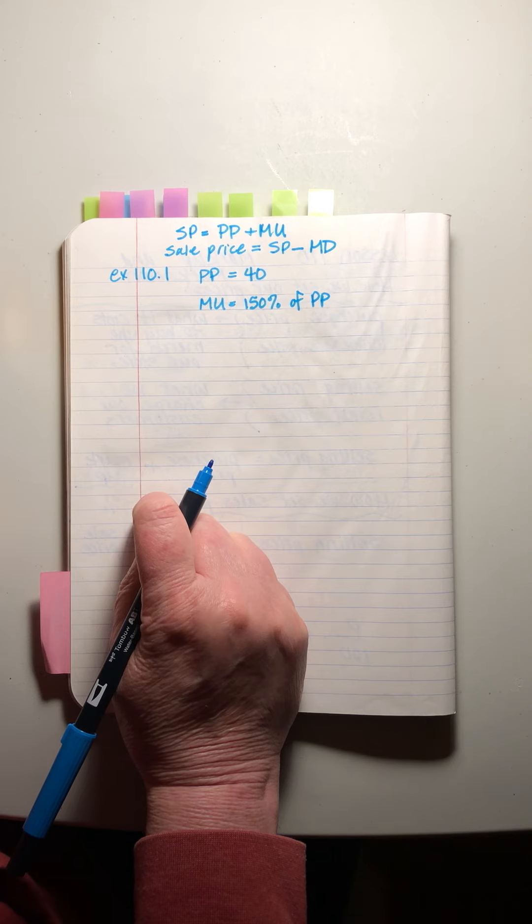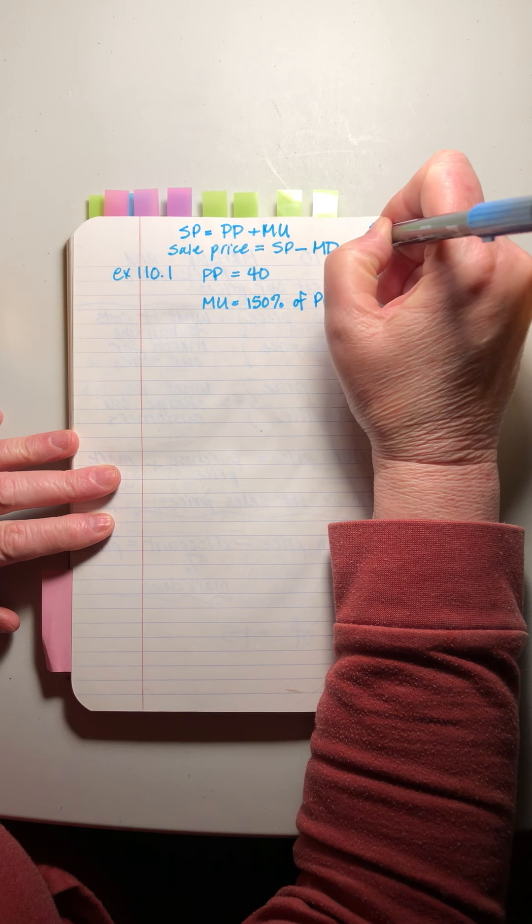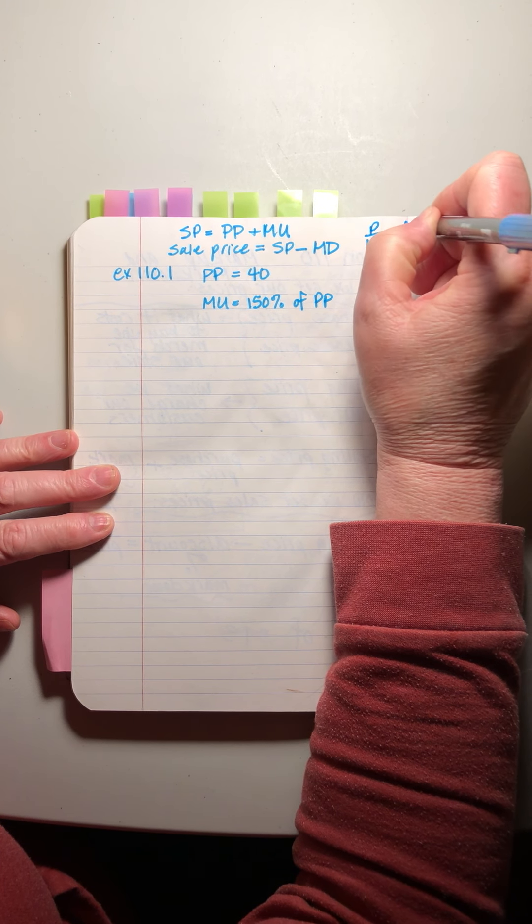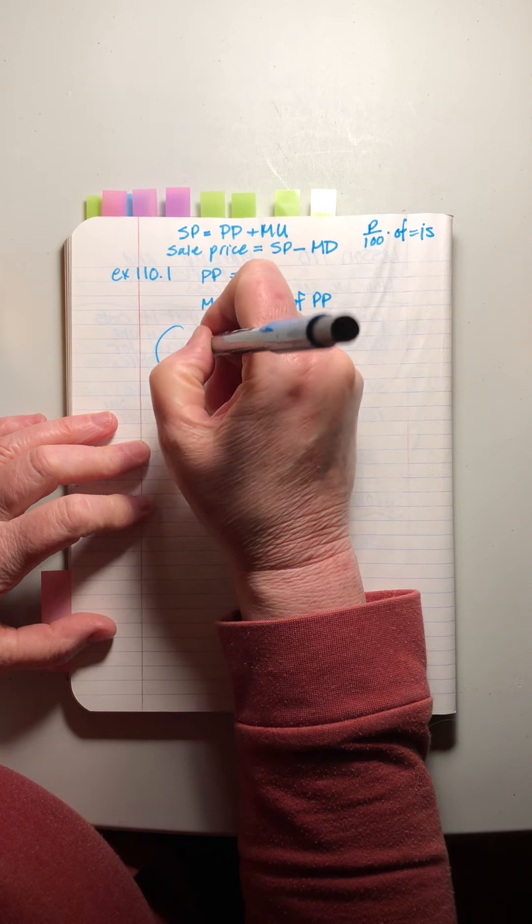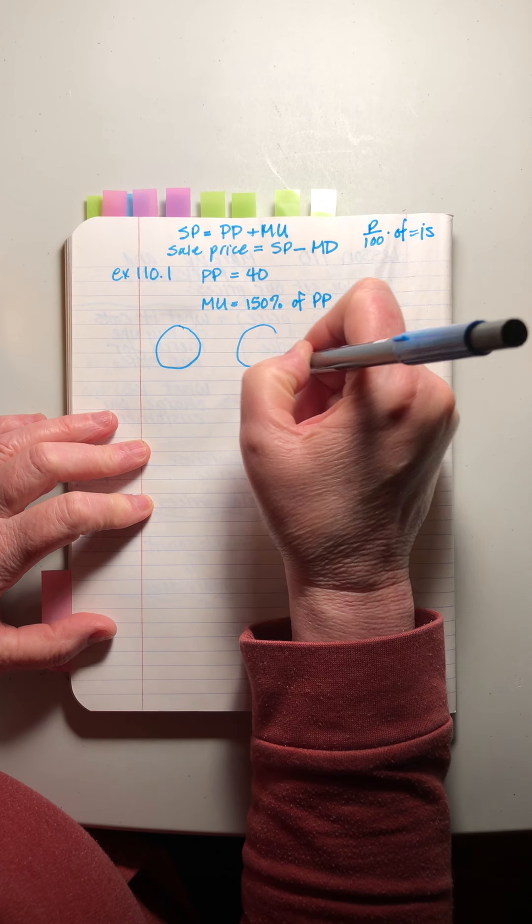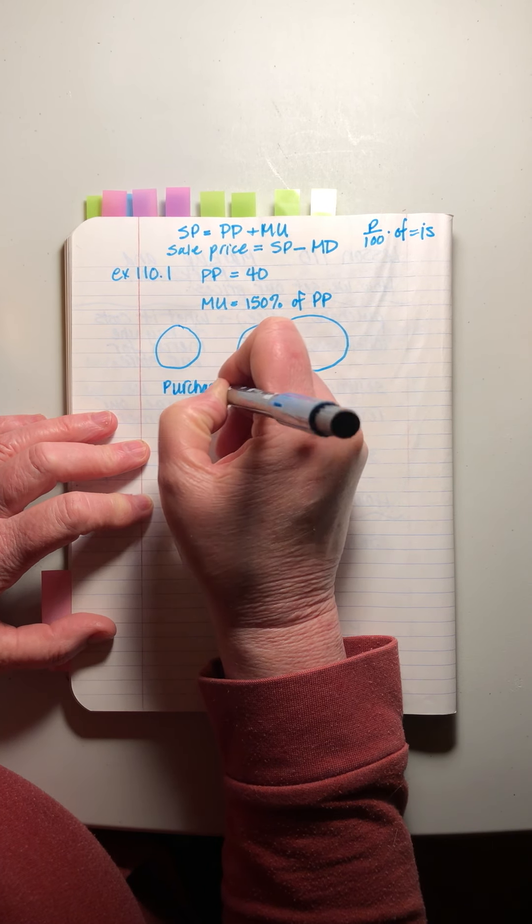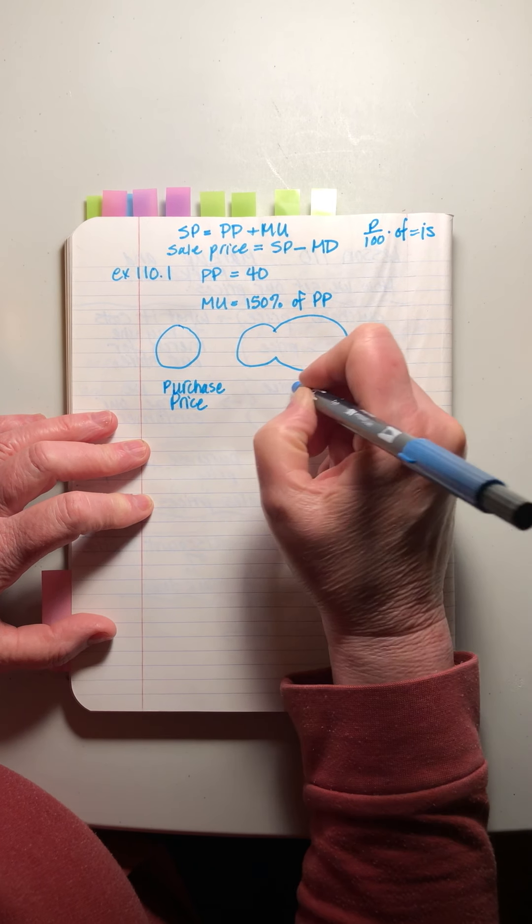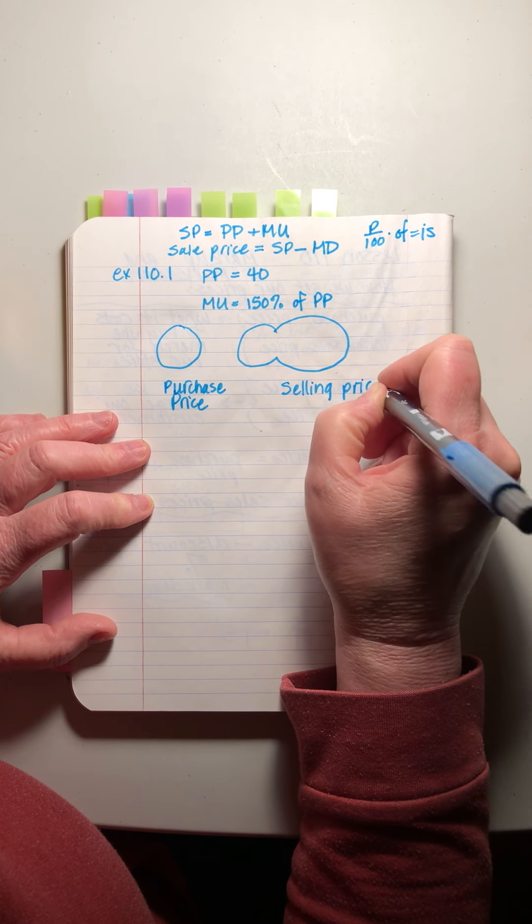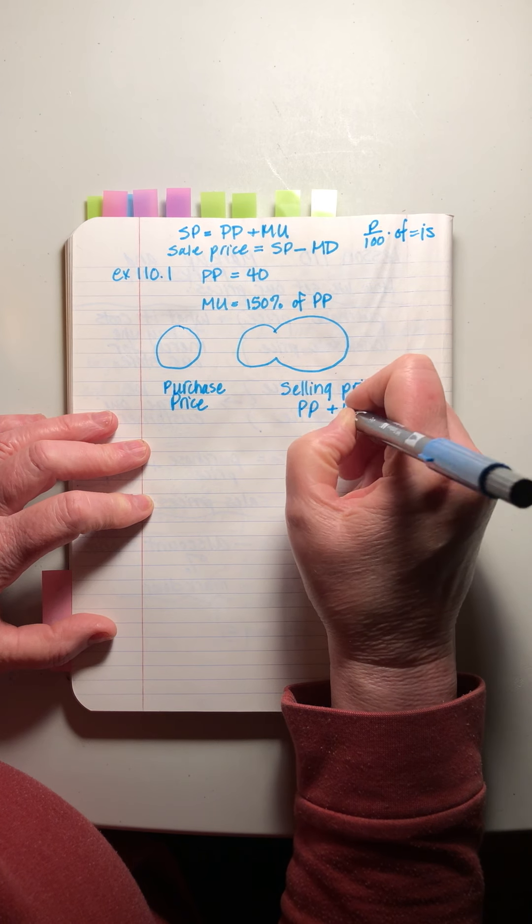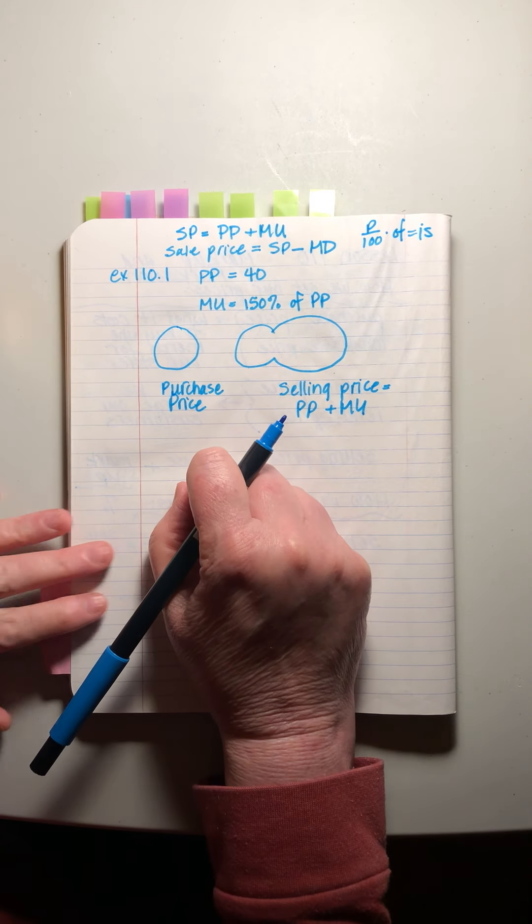What was the price he charged his customers? I'm also going to write the formula up here because that's the tool we're going to use for these problems. If we start and say, okay, let's start with our purchase price and then find the selling price. This is the purchase price and this is the selling price, which equals purchase price plus the markup.